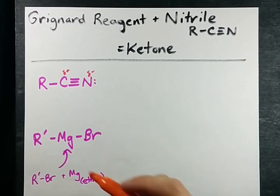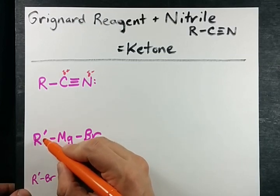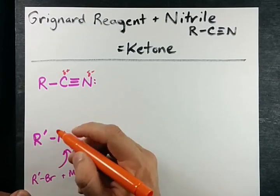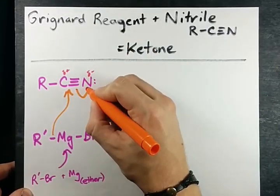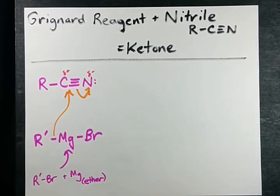boy that sure is attractive to a nucleophile like R prime with a lone pair as it is. It attacks and it breaks one of the pi bonds and forces one of them to become a lone pair on the nitrogen.